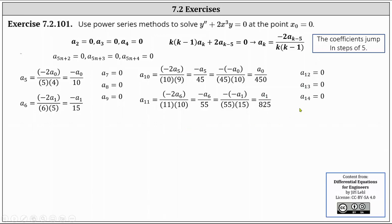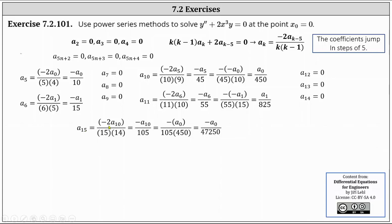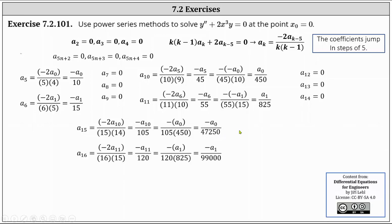The next three coefficients are again zero. For a₁₅: a₁₅ = −2a₁₀ / (15·14) = −a₁₀/105. Substituting a₁₀ = a₀/450 gives a₁₅ = −a₀/47,250. For a₁₆: a₁₆ = −2a₁₁ / (16·15). Substituting a₁₁ = a₁/825 gives a₁₆ = −a₁/99,000.